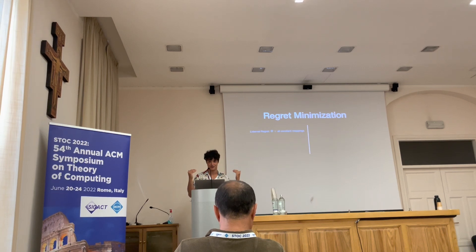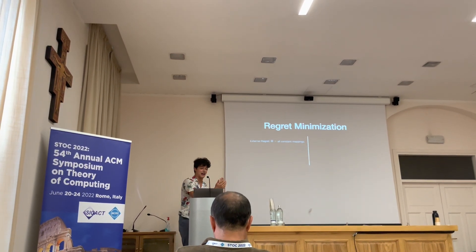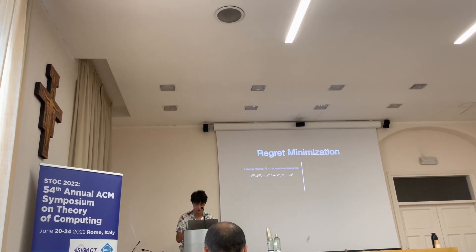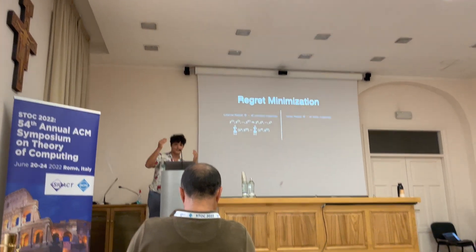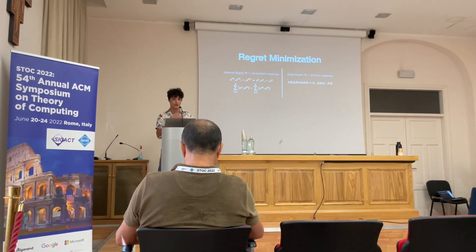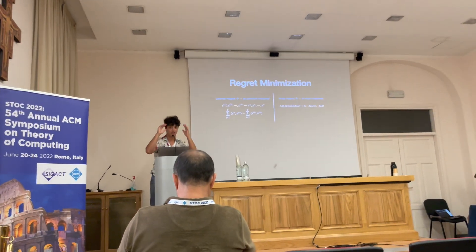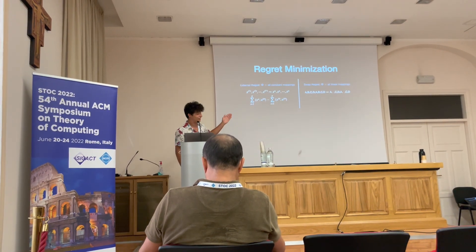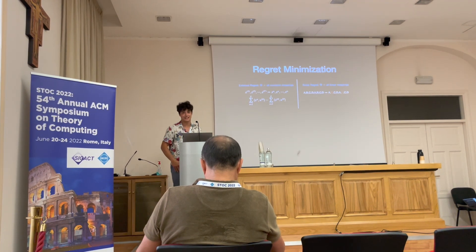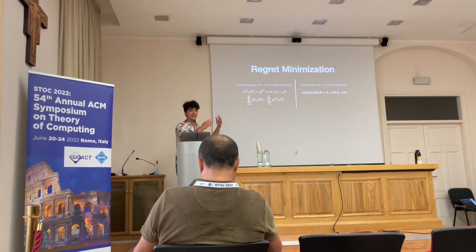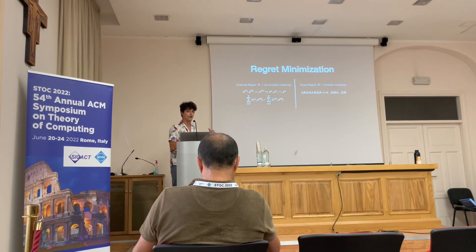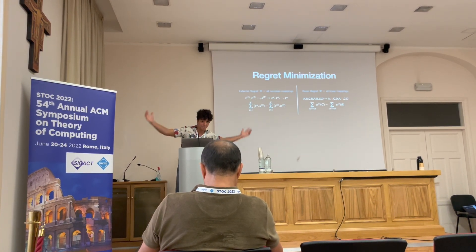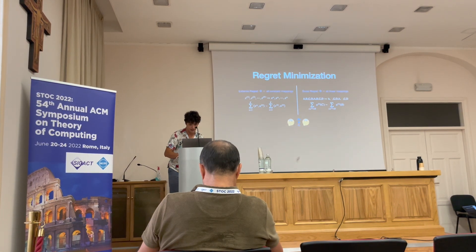The classic is external regret: we compare our performance to what we would have gotten by playing the best fixed action x* every single round. Then there's swap regret, which is more sophisticated — we allow competition against more sophisticated deviation functions. For example, if we played pure strategies A, B, C, D repeatedly and the times we played B we really messed up, we consider a swap of just strategy B to something else. This is a broader class of functions, so it's harder to get low regret in this setting.